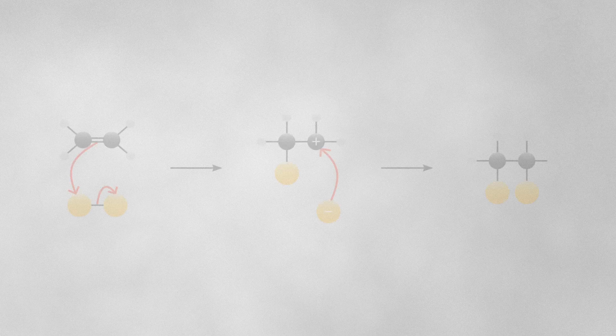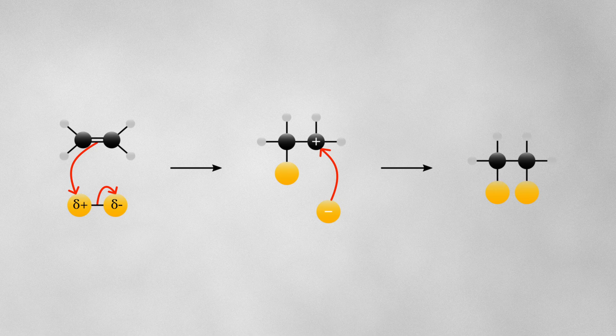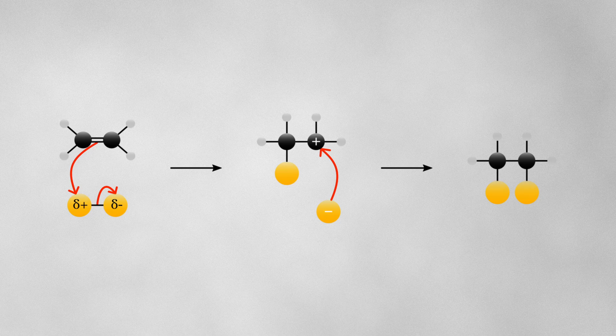Whether there are permanent dipoles or induced dipoles, it's important to know where partial charges will appear throughout a reaction mechanism. When you do, it'll be much easier to see where electrons are likely to move from one step to the next.